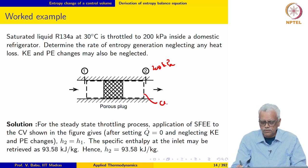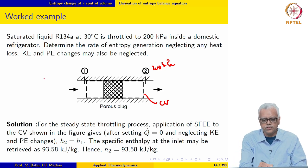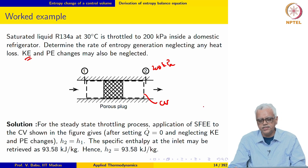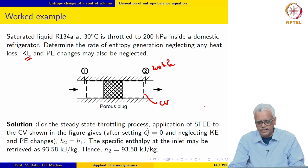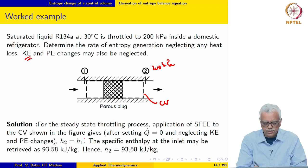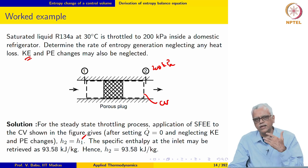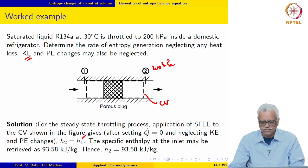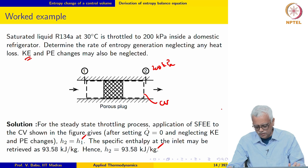This is our control volume. We had shown earlier that for this throttling process, if we neglect KE and PE changes and provided the change in specific volume is not very large, we can show that H_2 = H_1. It is very important to remember that this is true only if the change in specific volume is not very large. We can retrieve these values from the property table.